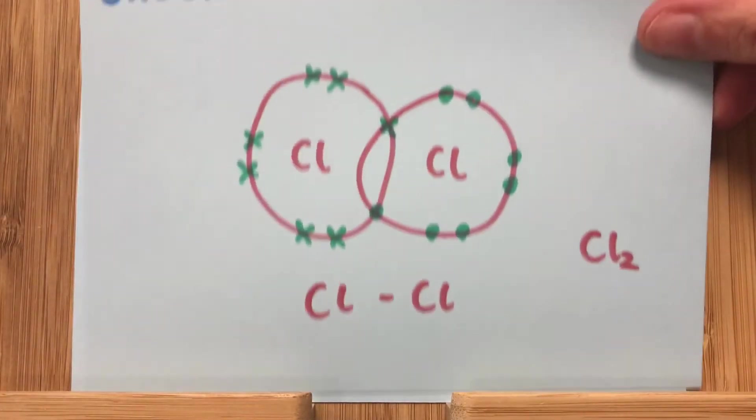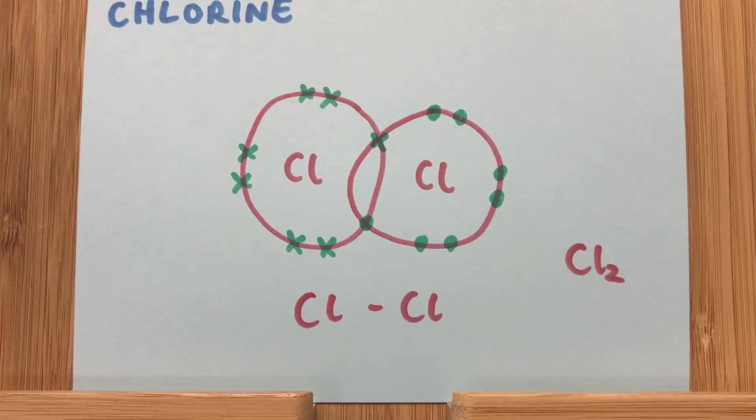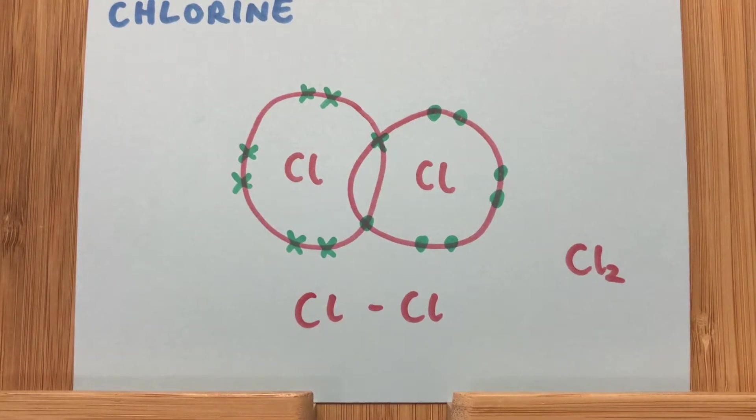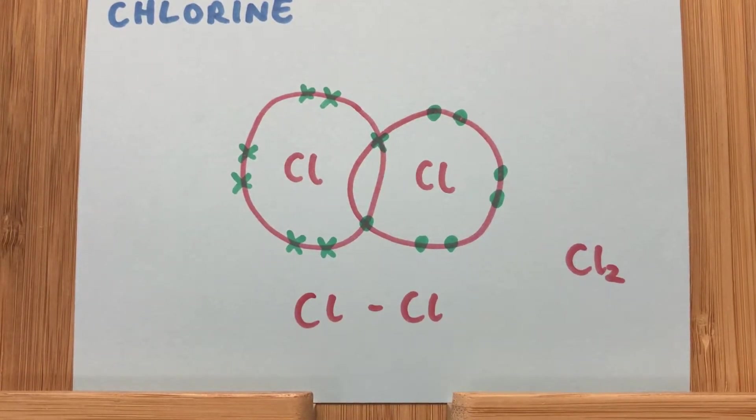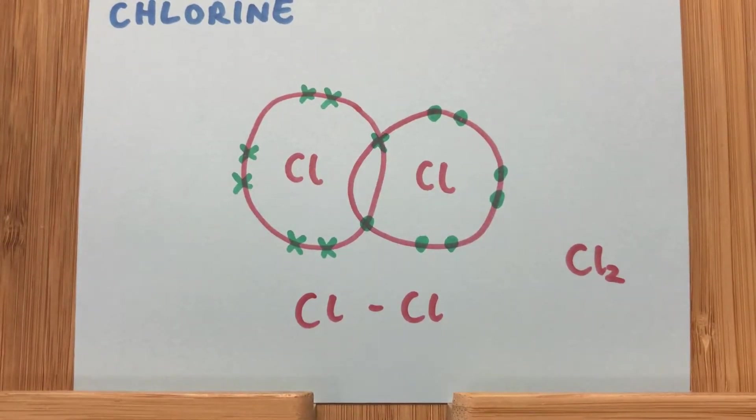So using that idea, let's look at chlorine. With covalent bonding, we only tend to draw the outer shells of electrons because it just makes it a lot clearer to see. With the ionic bonding where you lose an electron from the outer shell, you go down to the next shell, so it makes sense to draw all the shells. But here we just look at the outer shells.